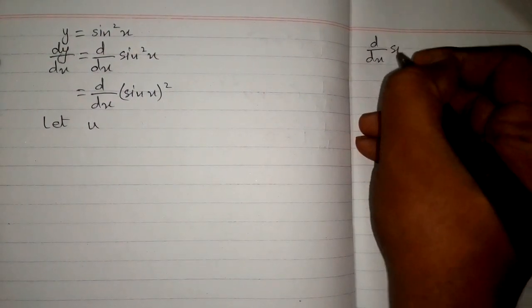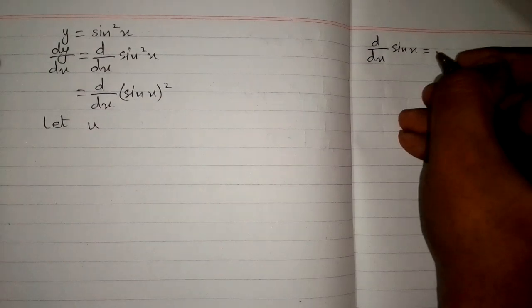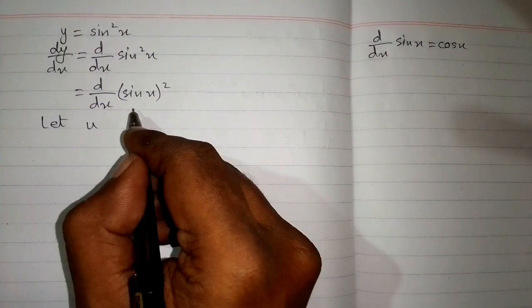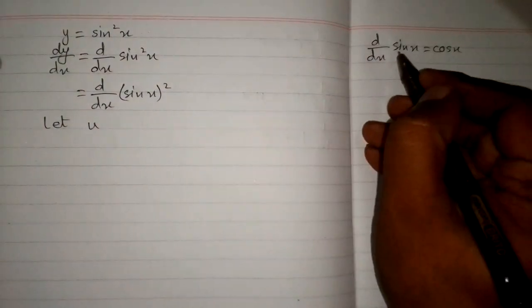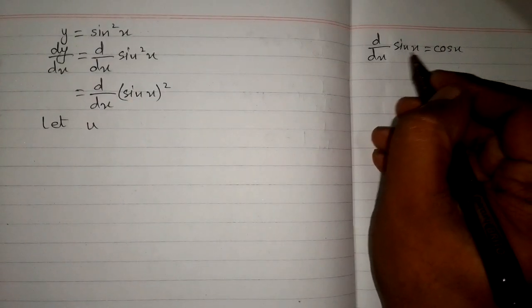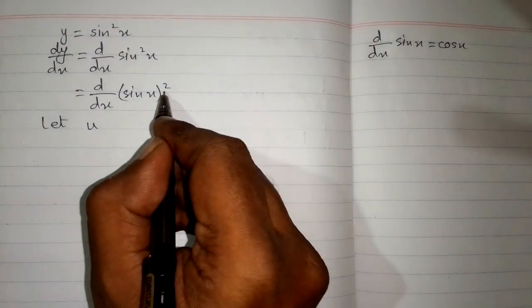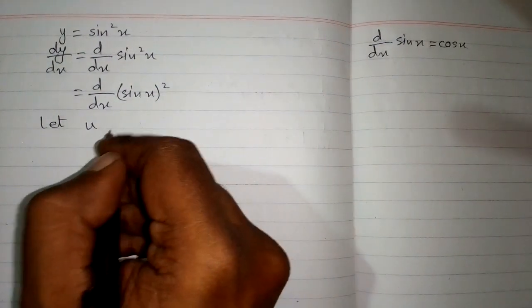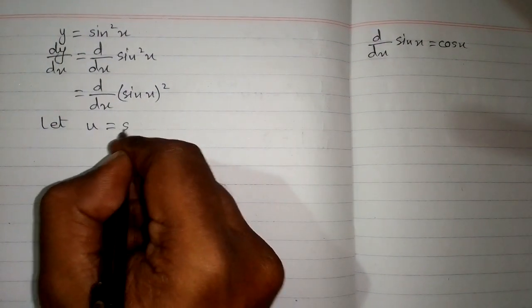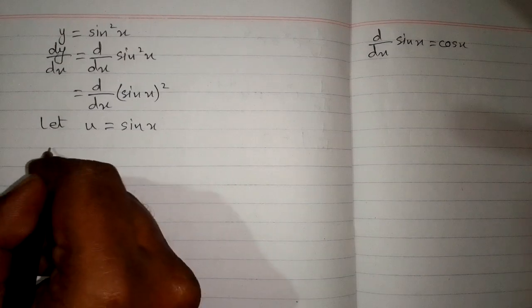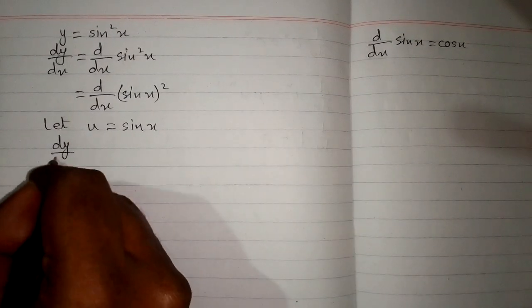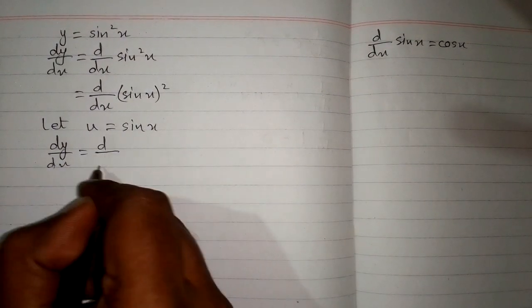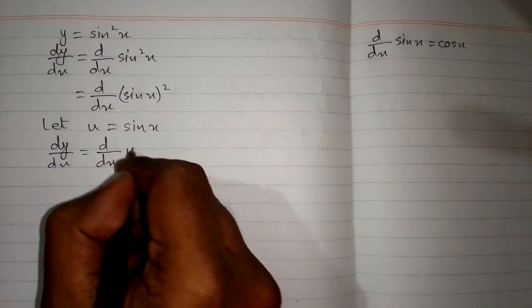We know that the derivative of sin x is cos x, but we cannot apply this formula here because we have sin x to the power 2, not just sin x. So we will let u = sin x, which gives us dy/dx = d/dx of u².